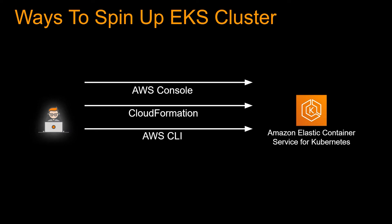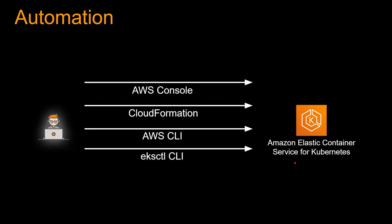The fourth option is eksctl CLI. If you want to spin up an EKS cluster from the console, CLI, or CloudFormation, you actually have to do a lot of stuff — certain subnets need to be private, new routing rules need to be set, and in some cases a new VPC needs to be created. But eksctl is an open source CLI tool where you can give one command and it will do all the necessary steps in the background.